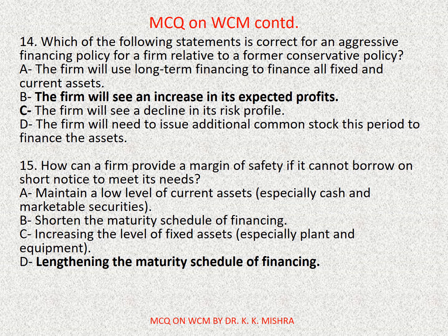Friends, if you like this video tutorial, please do not forget to subscribe, press the bell button, and pass it on to others who are in need. Question number fifteen: how can a firm provide a margin of safety if it cannot borrow on short notice to meet its needs? Options are: A) maintain a low level of current assets, especially cash and marketable securities; B) shorten the maturity schedule of financing; C) increase the level of fixed assets, especially plant and equipment; D) lengthen the maturity schedule of financing. Correct option is D: lengthening the maturity schedule of financing.